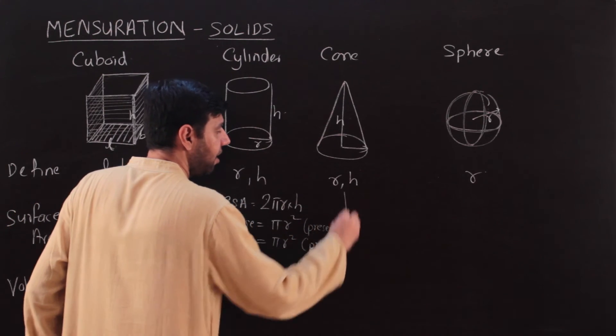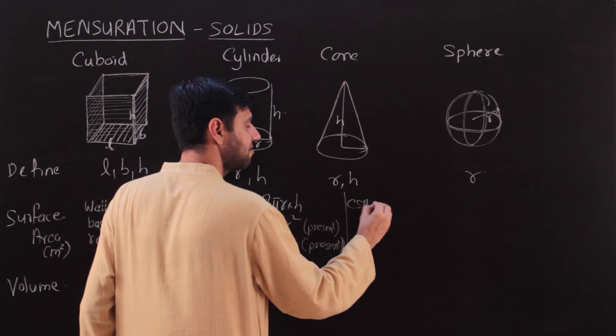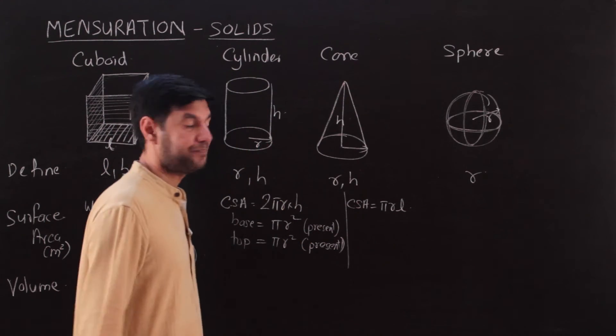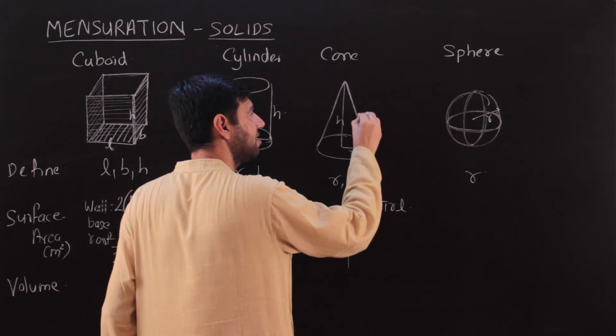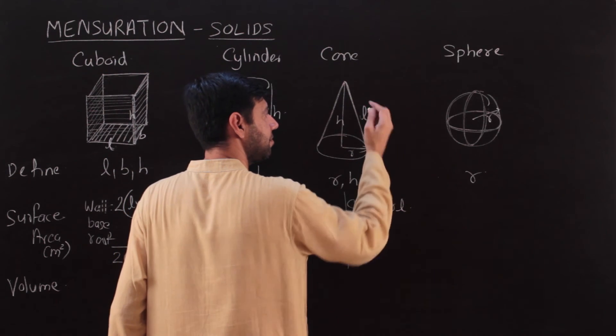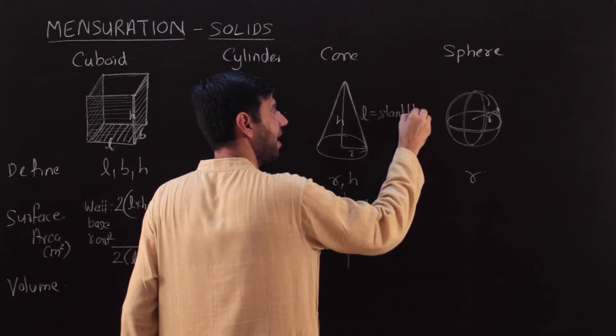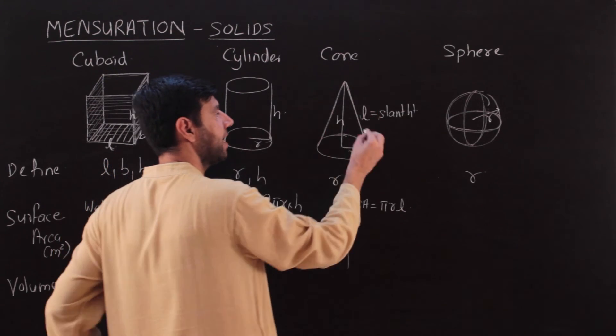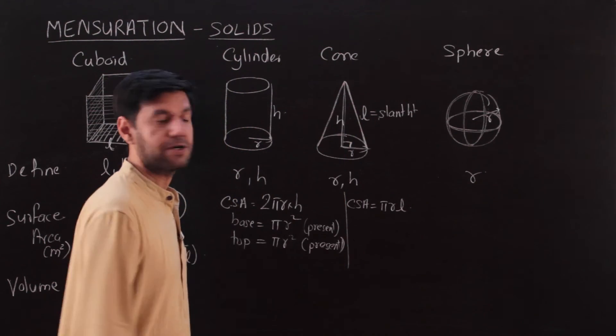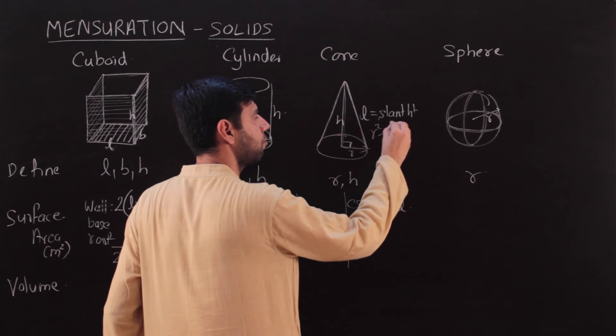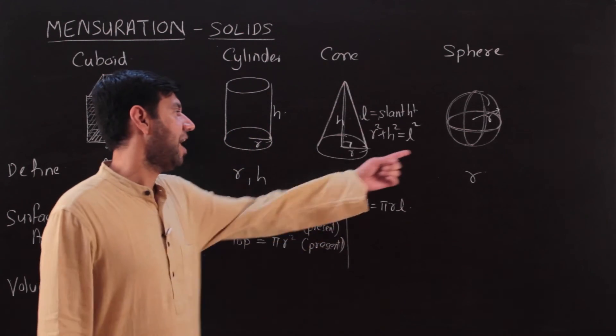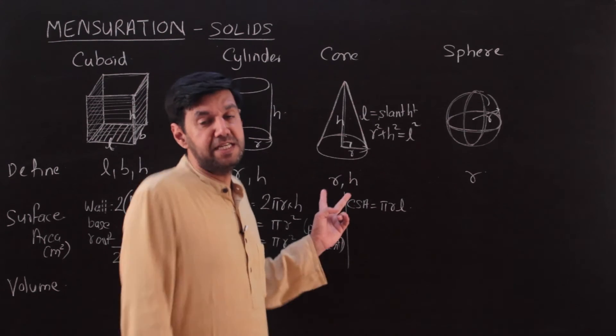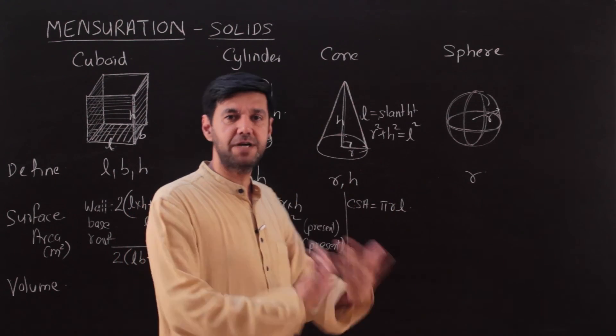For a cone, the curved surface area is πrl. What is this l? This l is your slant height. How do I find it? We have said if I know r and h, the cone is completely defined. This is a right angle triangle, and using Pythagoras theorem, I have r² + h² = l². If I have any two out of these three, the third can be found. While r and h are the defining characteristics of a cone, I could give you r and l, and h is what you would have to deduce.